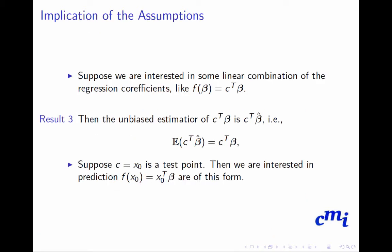Suppose we are interested in some linear combination of the regression coefficients, like cᵀβ. Then the unbiased estimator of cᵀβ is simply cᵀβ̂, since E[cᵀβ̂] = cᵀβ. Now suppose c = x₀, a test point. Then we are interested in the prediction f(x₀) = x₀ᵀβ, which is of this same linear combination form.